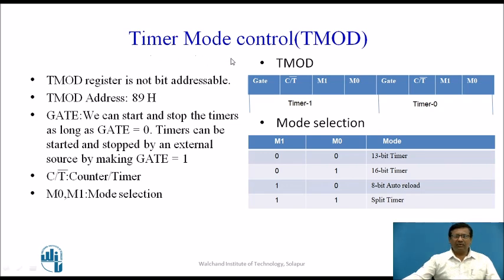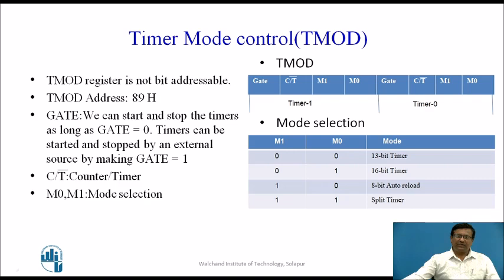Now let us discuss timer mode control register TMOD. TMOD register is not bit addressable. TMOD address is 89H. This is the TMOD register, which is an 8-bit register. Lower 4 bits are used for controlling Timer 0 and higher 4 bits are used for controlling Timer 1. There is a Gate bit, which is used to start and stop the timer. When Gate bit is 0, the timer can be started and stopped by using the TR0 bit.